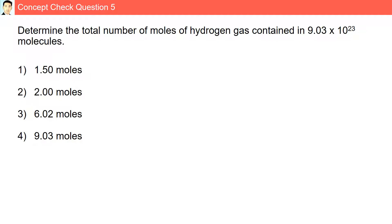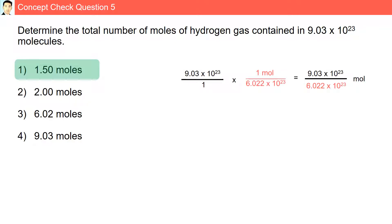Question 5. Determine the total number of moles of hydrogen gas contained in 9.03×10²³ molecules. We have 9.03×10²³ molecules of hydrogen, and dividing by 6.022×10²³ gives us 1.5 moles.